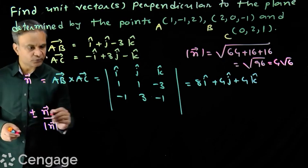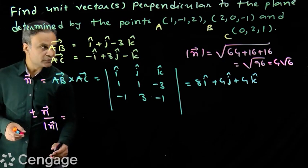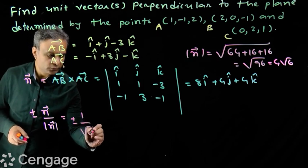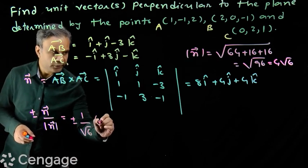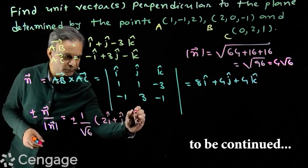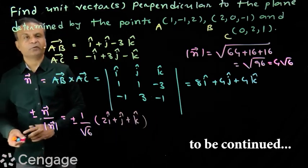So the required vectors will be ±(1/√6)(2i + j + k). These are the required vectors.